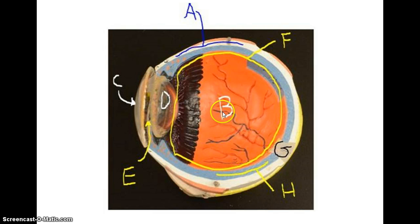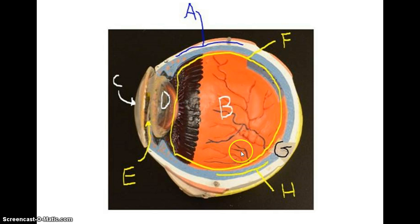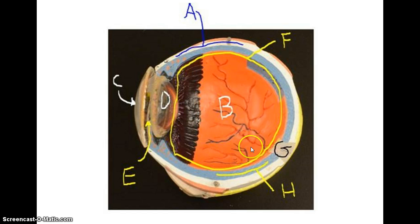Now we're going to a different view of the eye. You can still see the cornea, the lens, and the sclera. You now get a better view of the choroid layer — this blue structure here. We had the anterior cavity with its two chambers. Here, the back part behind the lens is the vitreous chamber, and it contains what's called the vitreous body, which is kind of gel-like. When you do your sheep eye dissection, you'll see what that looks like.